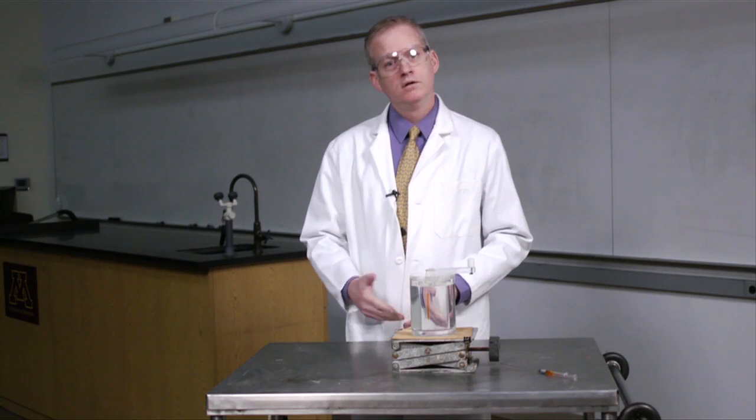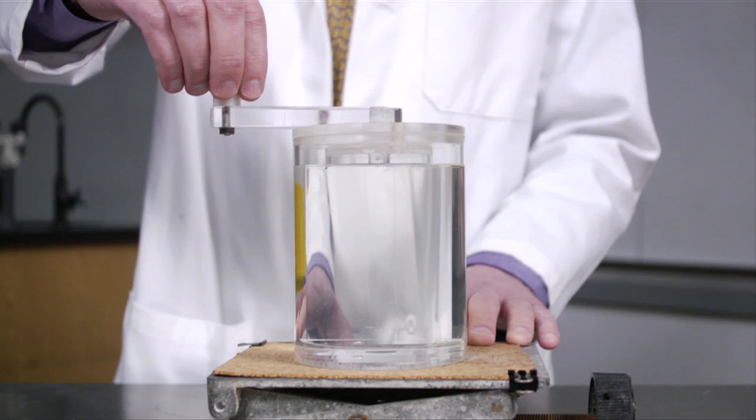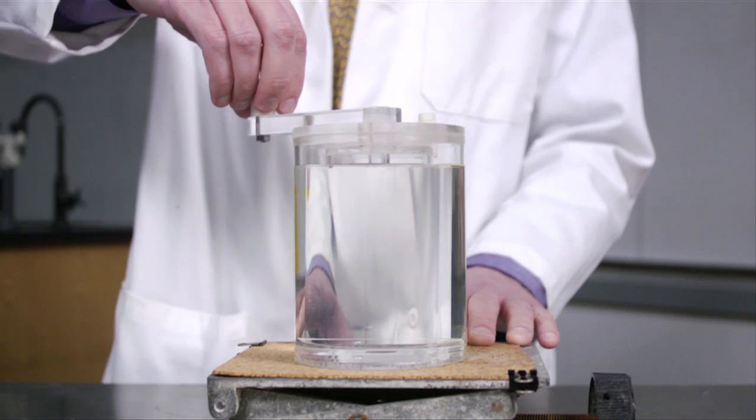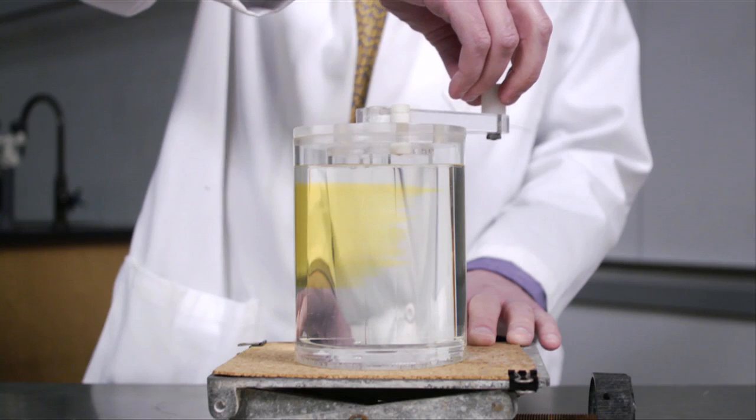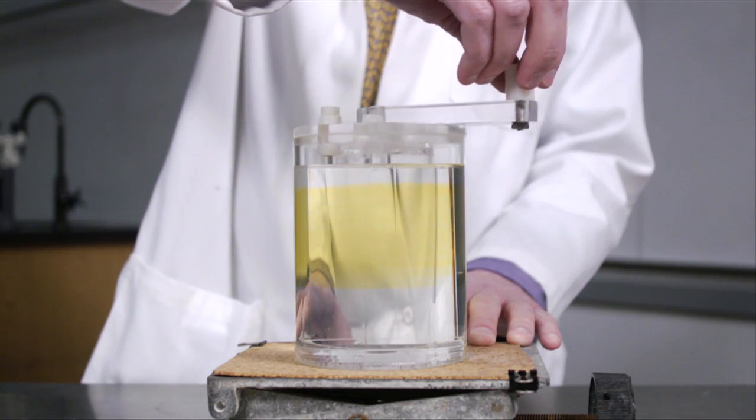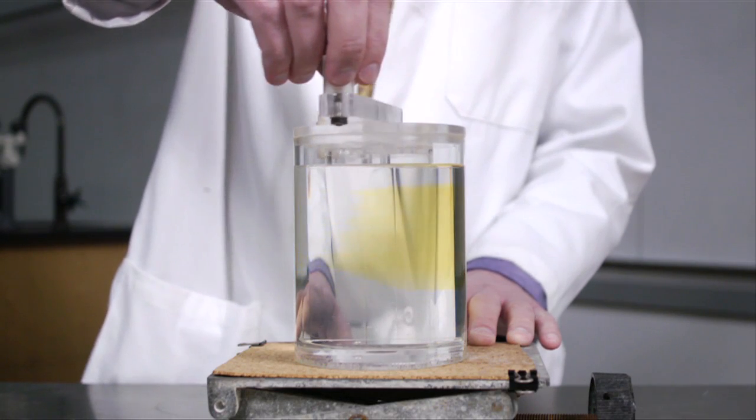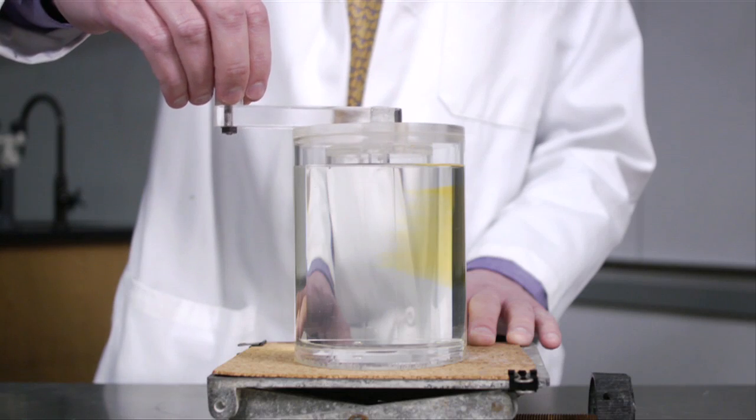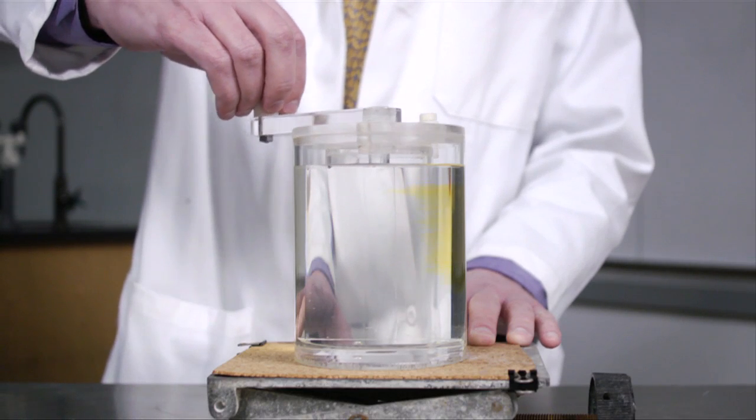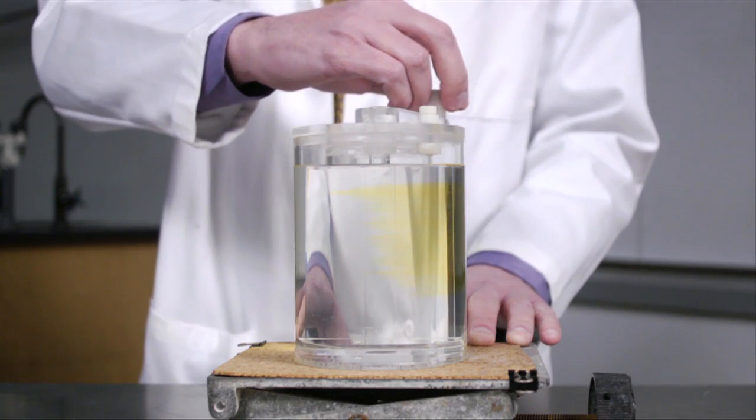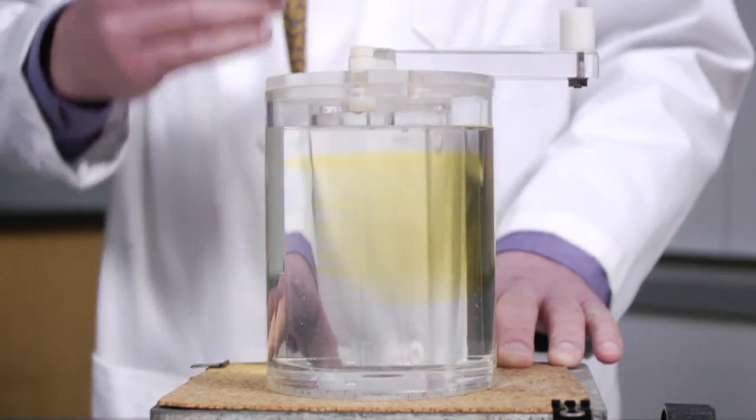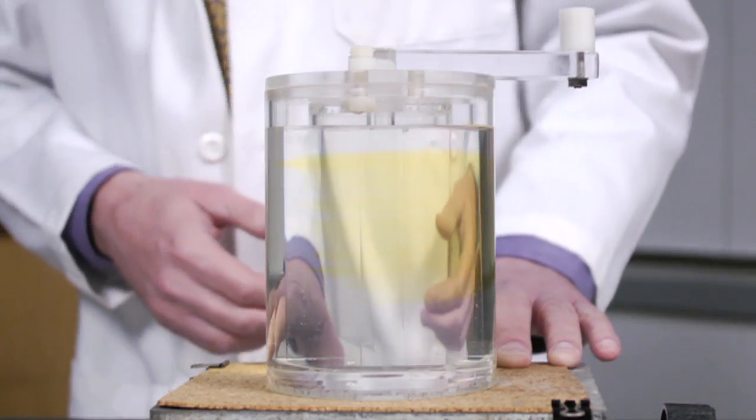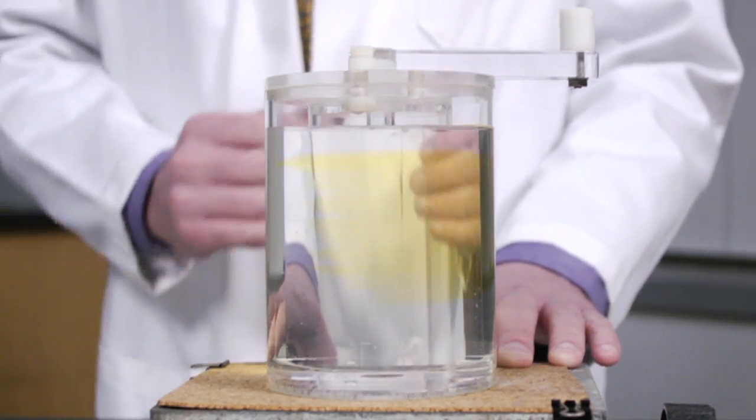So let's see what happens. Sure enough, as I turn the cylinder, the dye distributes. And by the time I've done about two revolutions, the color seems to be widely distributed throughout, even if not yet completely uniform, about as one might expect.